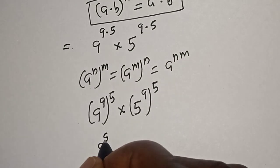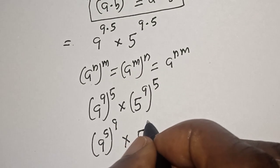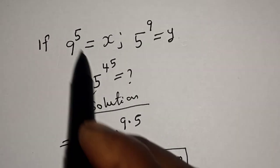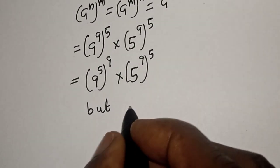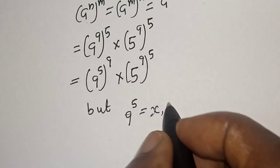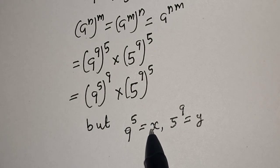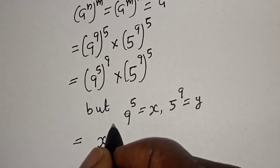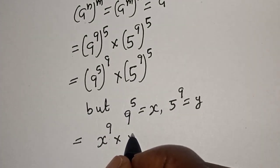This will become 9 raised to power 9 to the power of 5, multiplied by 5 raised to power 9 to the power of 5. From this rule we get 9 raised to power 5 to the power of 9, multiplied by 5 raised to power 9 to the power of 5. But 9 raised to power 5 is equal to x and 5 raised to power 9 is equal to y, so replacing: x raised to power 9 times y raised to power 5.